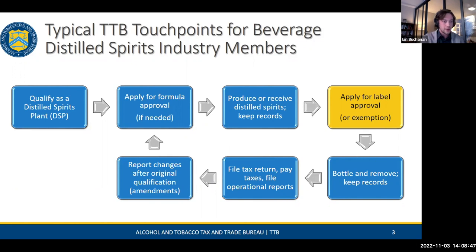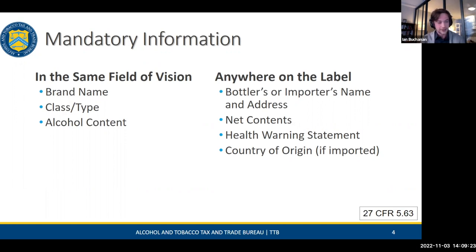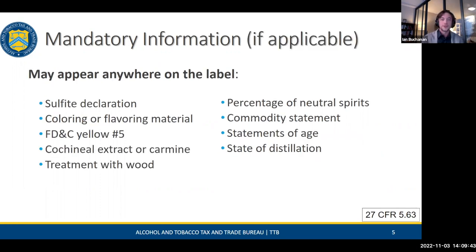Next, we have seven or more pieces of mandatory labeling information. Since we updated our regulations in March, we no longer have an 'brand label' per se. Three pieces of information must appear in the same field of vision — meaning the same side of the container, readable without turning it. Those are the brand name, your class and type, and the alcohol content. Additionally, anywhere else on the bottle: the bottler's or importer's name with address, net content statement, health warning statements, and country of origin if importing.